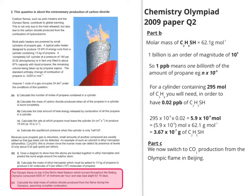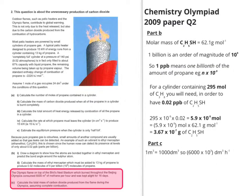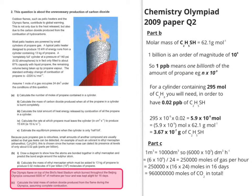This final part is about the Olympic flame in Beijing. You want the total mass of CO₂ produced. There are 6,000 metres cubed of methane per hour, and since there are 1,000 decimetres cubed in one metre cubed, that's 6,000 × 10³ dm³ per hour, giving 250,000 moles of gas per hour. That comes to a whopping 960 million moles of CO₂ in total, which is 4,224 million grams — an eye-watering 4,224 tonnes of CO₂ produced during the course of the 16 days.